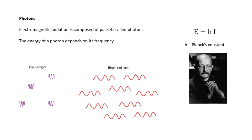One last slide. In terms of particles, light comes in little packets like particles and we call them photons. The energy of a photon just depends on its frequency: E equals hf, where h is Planck's constant — and there's Max Planck watching television.